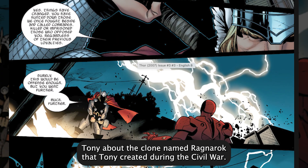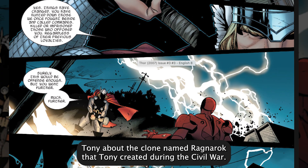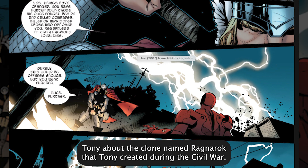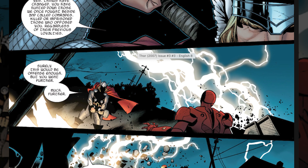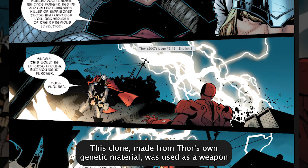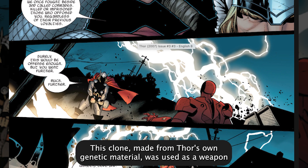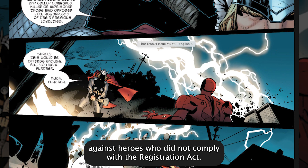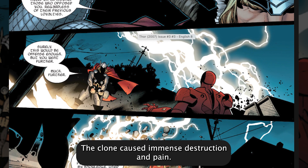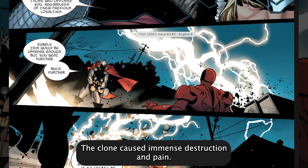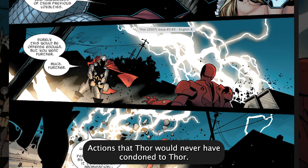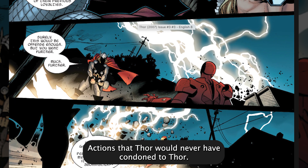Thor confronts Tony about the clone named Ragnarok that Tony created during the Civil War. This clone, made from Thor's own genetic material, was used as a weapon against heroes who did not comply with the Registration Act. The clone caused immense destruction and pain — actions that Thor would never have condoned.